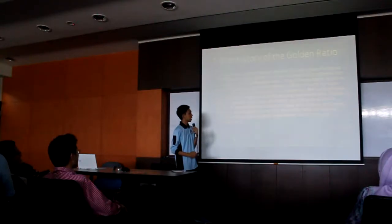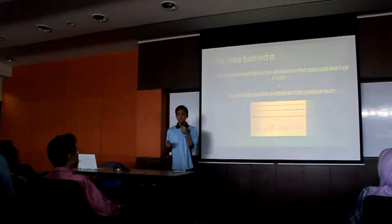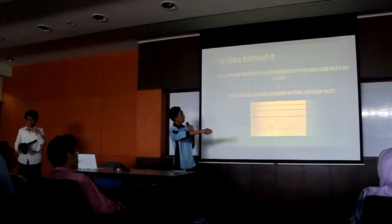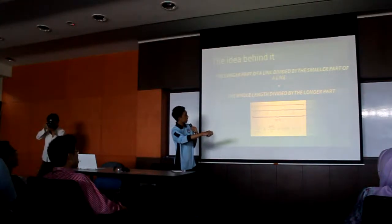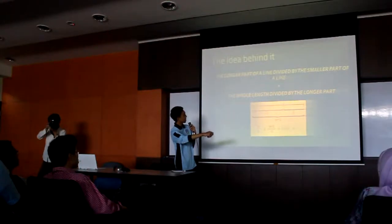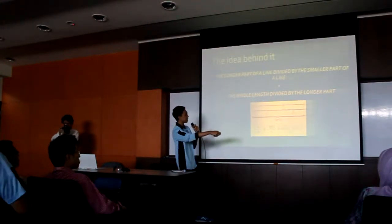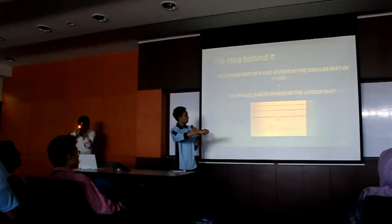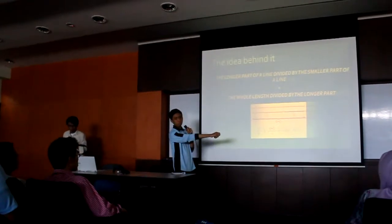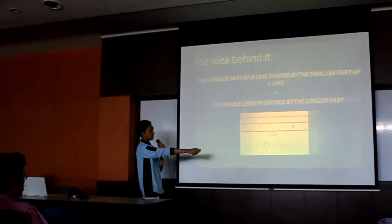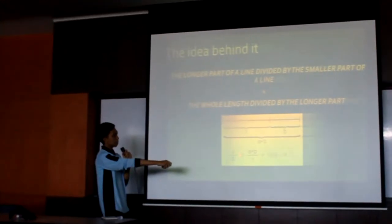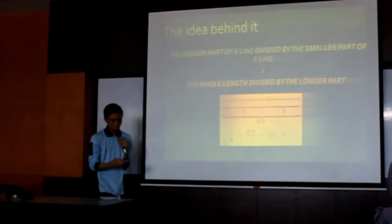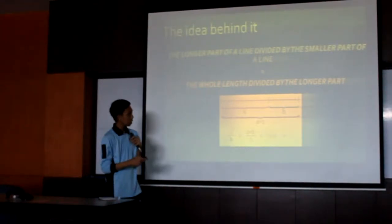The idea behind the golden ratio is that the longer part of the line, a, plus the smaller part, b, divided by a, equals a divided by b, which equals the whole line divided by the longer part. So if you divide the long part by the small part, you get 1.618, and if you divide the whole length by the longer part, you also get 1.618 — the golden ratio.